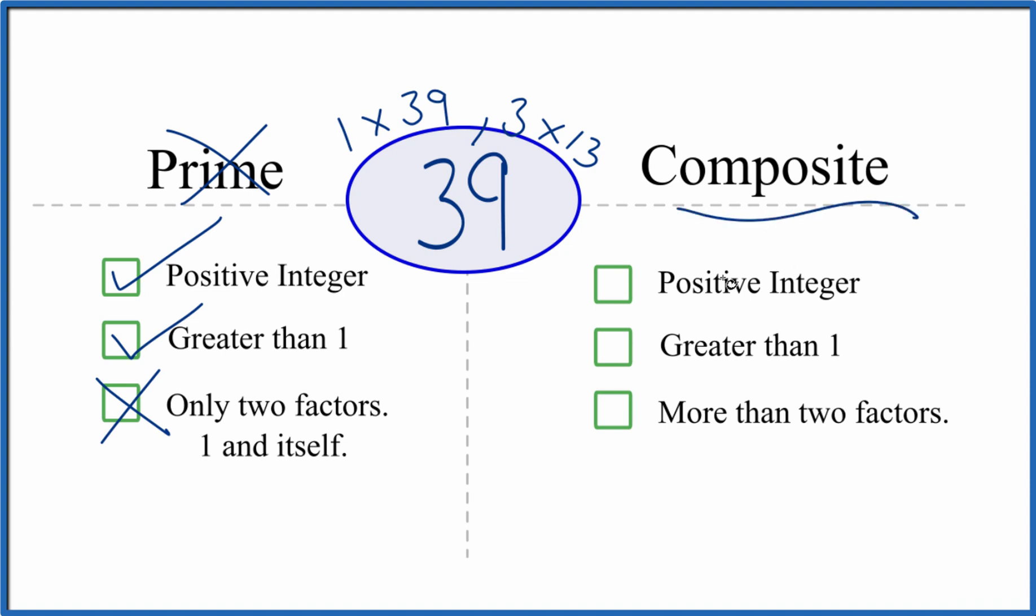But is it a composite number? We have a positive integer, it's greater than 1, and there are more than two factors. One, two, three, four.